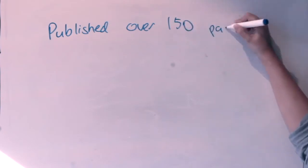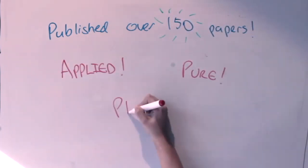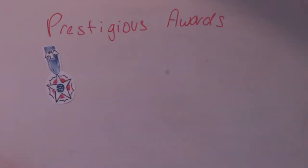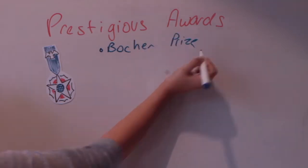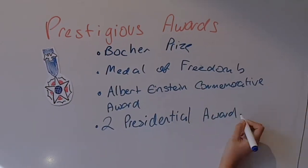Neumann published over 150 papers in his lifetime, including approximately 60 in pure mathematics, 60 in applied mathematics, and 20 in physics. Neumann received many prestigious honors, such as the Bôcher Prize, Medal of Freedom, the Albert Einstein Commemorative Award, and two presidential awards.